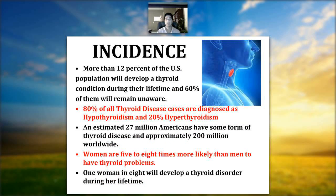More than 12% of the US population will develop a thyroid condition during their lifetime, and 60% will remain unaware. There is also a category called subclinical hypothyroidism — not yet showing up in blood work, but the patient still has many signs and symptoms. You may have all the symptoms but be told your thyroid hormones are normal — that's subclinical hypothyroidism.